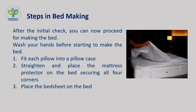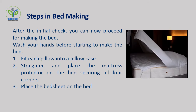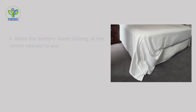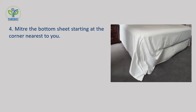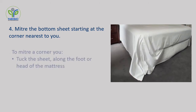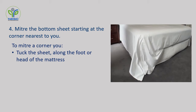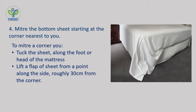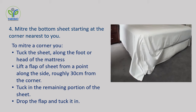Then unfold the fresh sheet and place it on the bed right side up. Then miter the bottom sheet, starting at the corner nearest to you. To miter a corner, tuck the sheet along the foot or head of the mattress, then lift the flap of sheet from a point along the side roughly 30 cm from the corner. Tuck in the remaining portion of the sheet, drop the flap, and tuck it in — just as the lady is following the steps in the video.